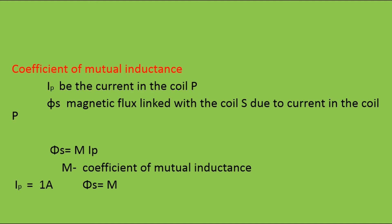Next, the coefficient of mutual inductance. Let IP be the current in coil P. Then φS is the magnetic flux linked with coil S due to the current in coil P. We can write φS proportional to IP, and removing the proportionality by adding constant M, we get φS = M·IP. Here, M is called the coefficient of mutual inductance.